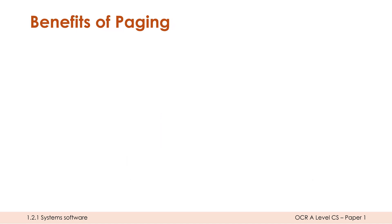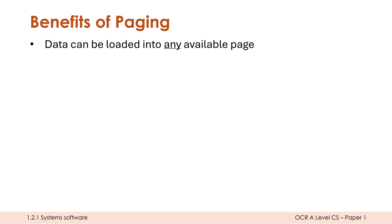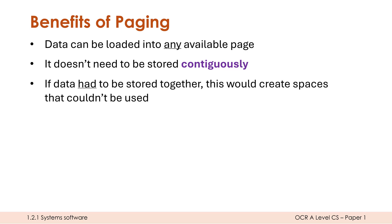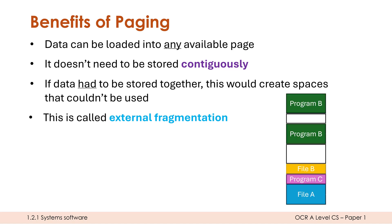What are the benefits of paging? Data can be loaded into any available page. If there are gaps in RAM, I'm able to fill in those gaps, which means data doesn't need to get stored contiguously. Contiguous means adjacent or in a single block or continuous. If data is spread out in different locations, that's not contiguous. If it's in one nice block, that is contiguous. If we had to store data together, this would create really awkward spaces which just couldn't be used, which is inefficient. This inefficiency is called external fragmentation, and that isn't an issue for paging. Paging doesn't have external fragmentation, whereas as we'll look at, segmentation does.